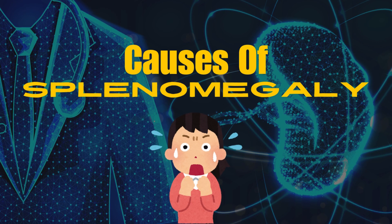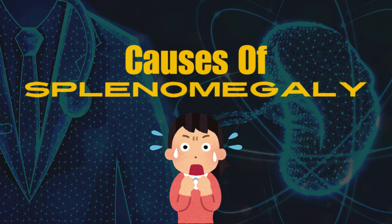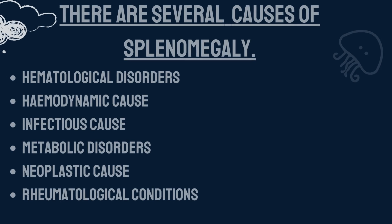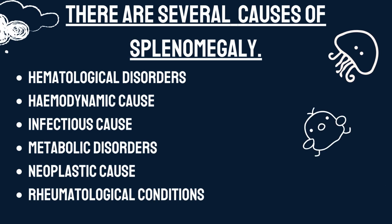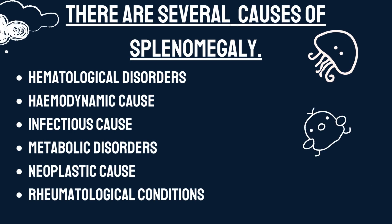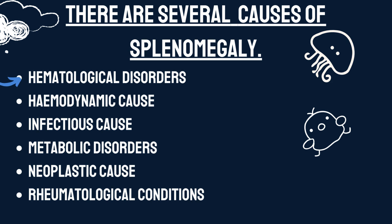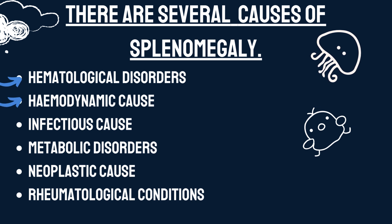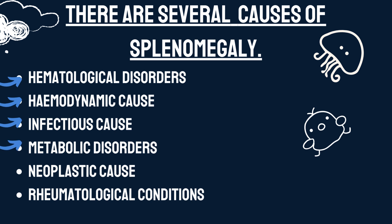Now we will discuss our main topic: causes of splenomegaly. There are several causes of splenomegaly. We will discuss six categories: hematological disorders, hemodynamic causes, infectious causes, metabolic disorders, neoplastic causes, and rheumatological conditions.